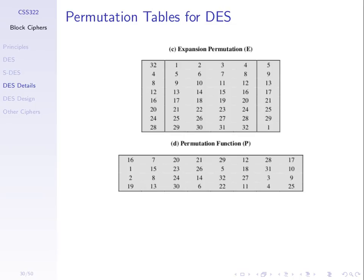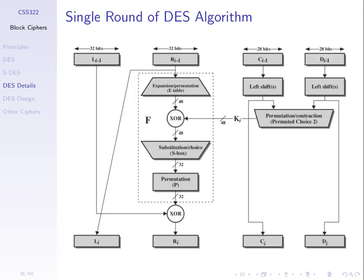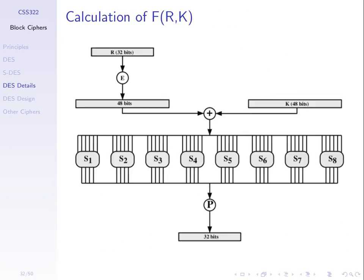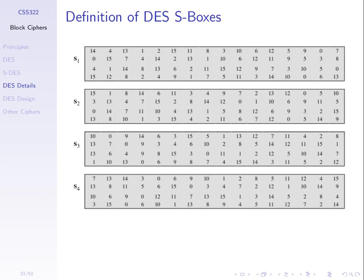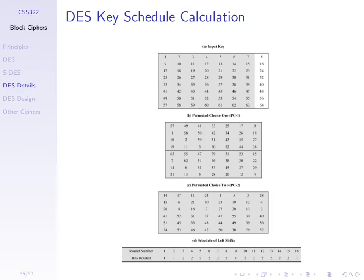The details of one round involve expanding and permuting, taking our left and right half, expand and permute, XOR with a key, S-box, permute, XOR with a left half — the same concepts we saw with simplified DES. The S-boxes are given there; there are eight of them. It takes six bits in and produces four bits out.